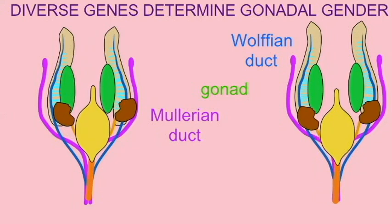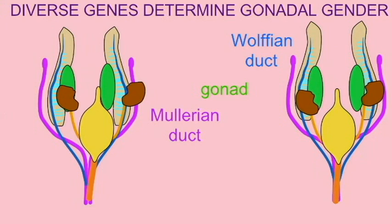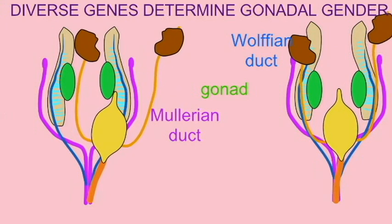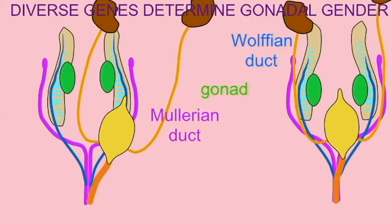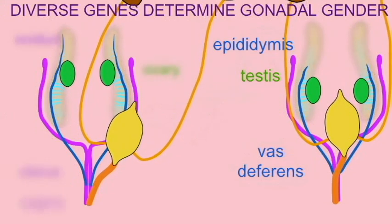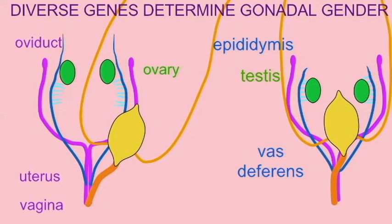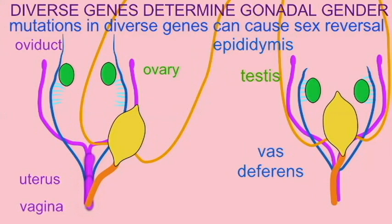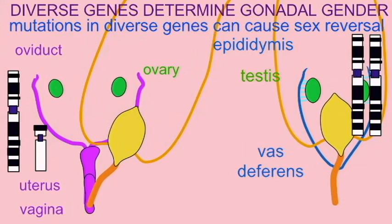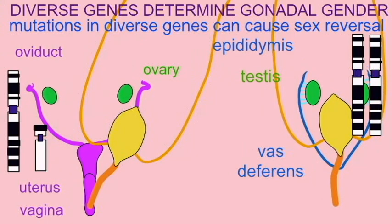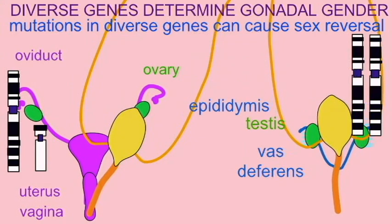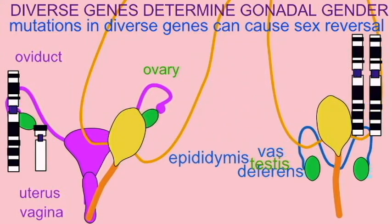In conclusion, after chromosomal gender has been determined, there is still the activation of transcription factors which convert the bipotential gonad either into an ovary or a testis — gonadal gender. There are a number of genes involved in this process, and mutations in many of these genes are capable of causing either XY sex reversal, where XY individuals develop as females, or XX sex reversal, where XX individuals develop as males.